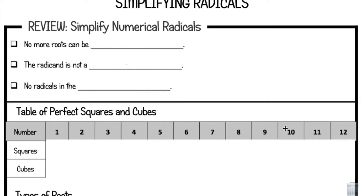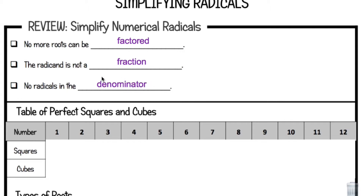This lesson is on simplifying radicals. For a little review, let's think about what a simplified radical needs to have. There are three things we need to remember. Number one, no more roots can be factored. Also, the radicand is not a fraction. And no radicals can be in the denominator. If those three things are true, then we know we have simplified our radical as much as we can.